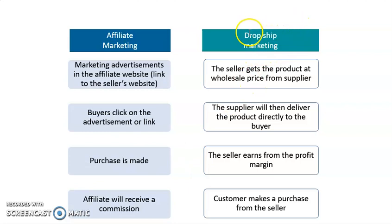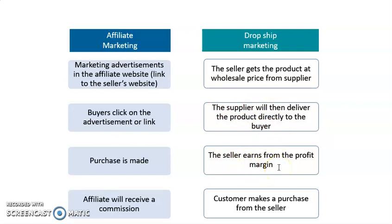Another method is dropship marketing. The seller gets the product at wholesale price from the supplier, and the supplier delivers the product directly to the buyer. In this way, the seller can earn more profit because they do not go through a third party — they sell directly to the customer. Customers may trust the seller better and may also receive a special discount for buying directly.